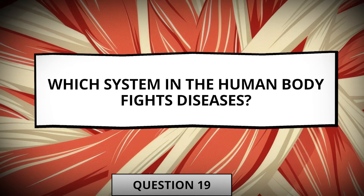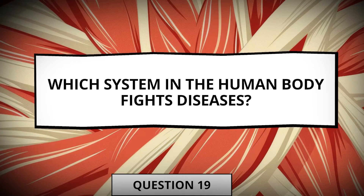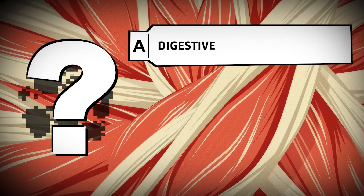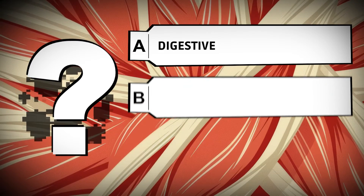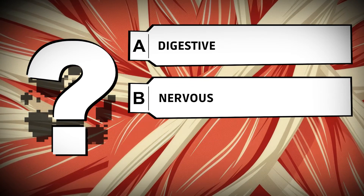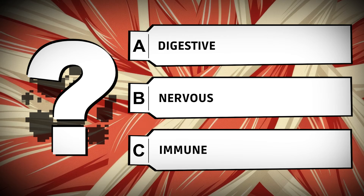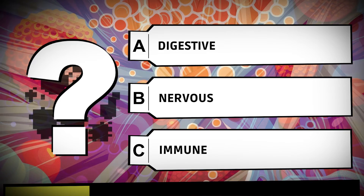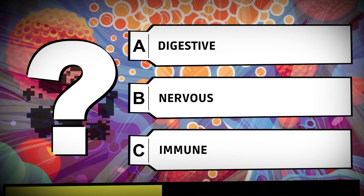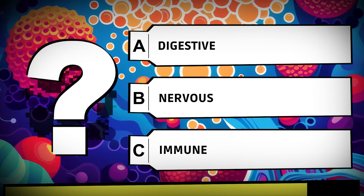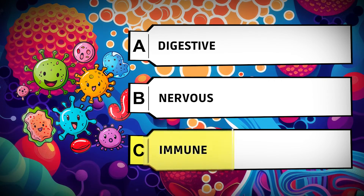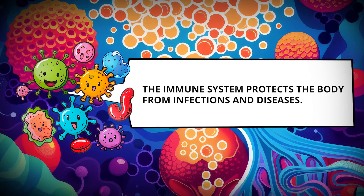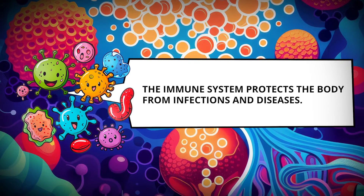Which system in the human body fights diseases? Digestive, nervous, immune. The immune system protects the body from infections and diseases.